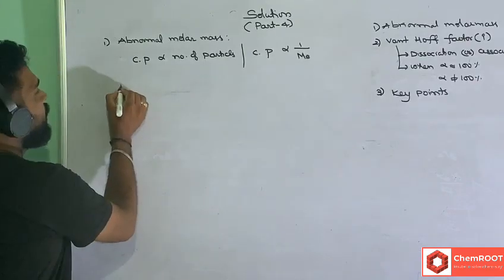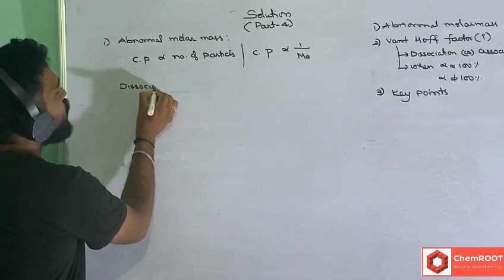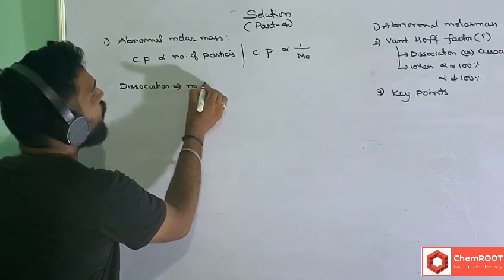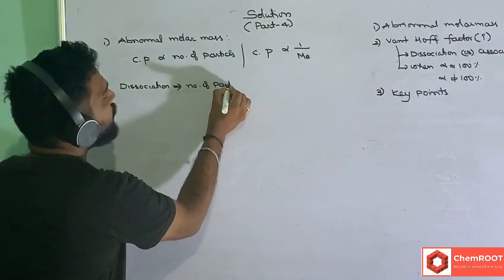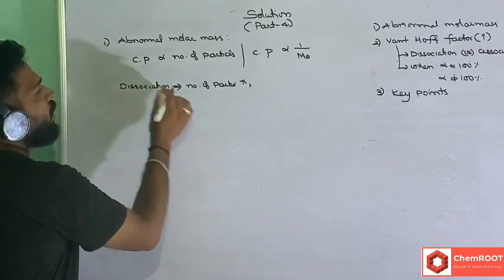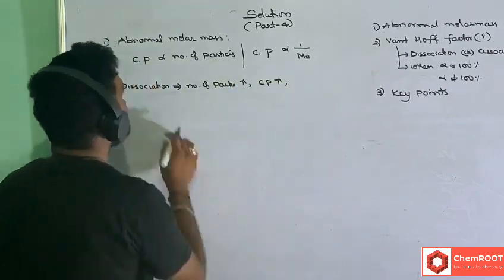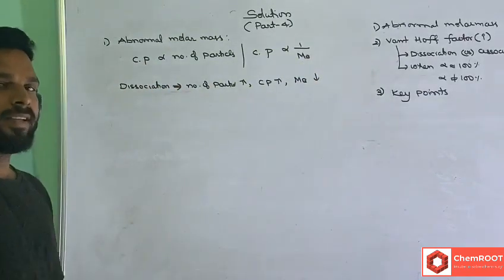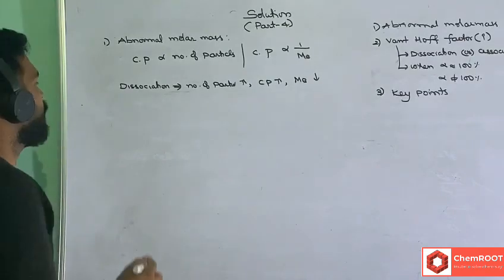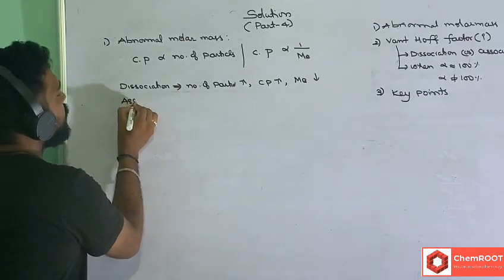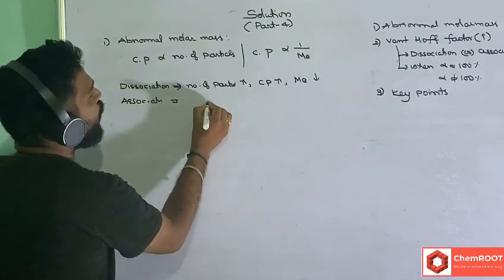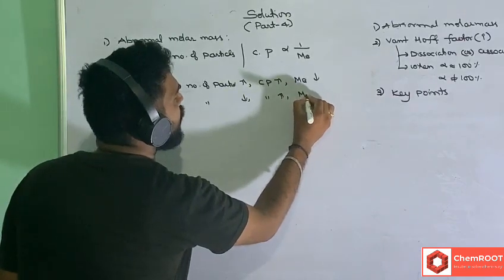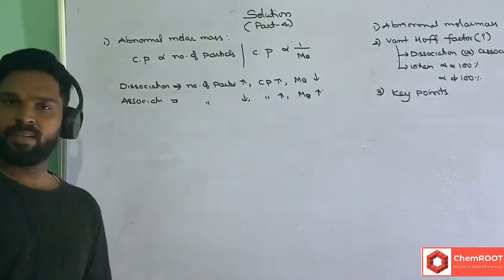So when dissociation takes place, the number of particles increases. When number of particles increases, the colligative property increases, and then the molecular weight we observe will be lesser than the expected value. If association is going on, the number of particles decreases, colligative property decreases, and molecular weight comes out more than expected.